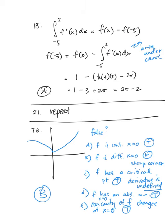In number 18, we're given the graph of f prime and asked to find f of negative 5 using FTC number 1. We know the integral from negative 5 to 2 of f prime of x dx equals f of 2 minus f of negative 5. Rearranging: f of negative 5 equals f of 2 minus that integral. With f of 2 equal to 1, and the area consisting of a triangle and a semicircle underneath the x-axis, distributing the negative gives 2 pi minus 2, or choice A.